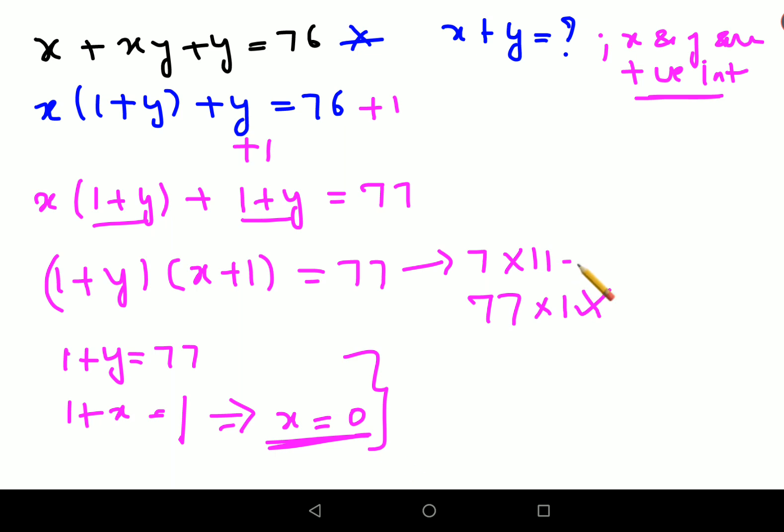So the only option left for us is this one. From here I can say that (1 plus y) equals to 7 and (1 plus x) equals to 11. See, order doesn't matter for us because we need to find the addition of x plus y. So y is 6 and x is 10.